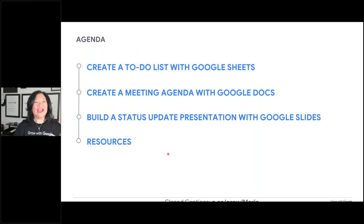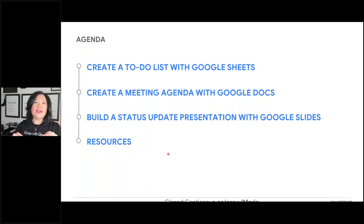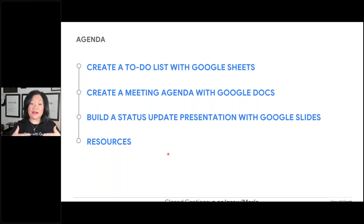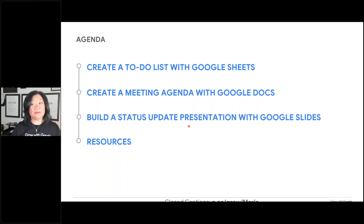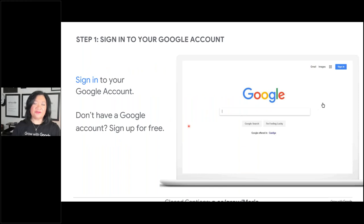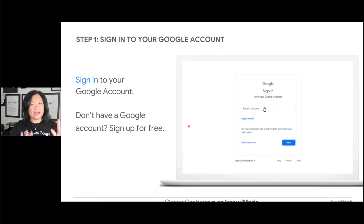We're going to talk about how to put a to-do list together today. We'll talk about how to create a meeting agenda — I'll show you how to do that in Google Docs. I'll show you a live demo on the slides animated, and then go to live demo. We're also covering building a status update with Google Slides. Everything I'm talking about today is 100% free with your free personal Gmail account.